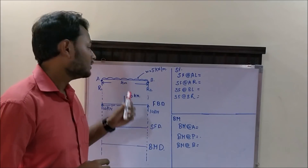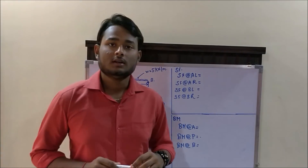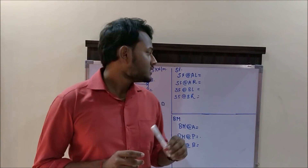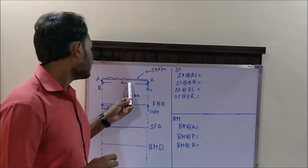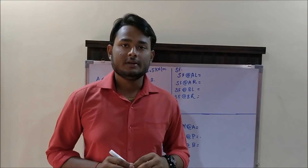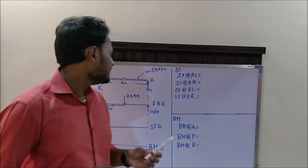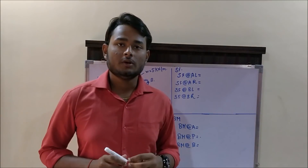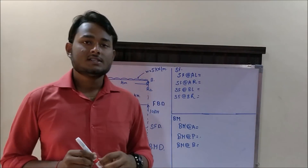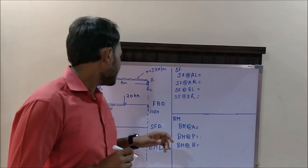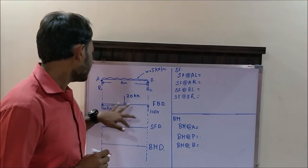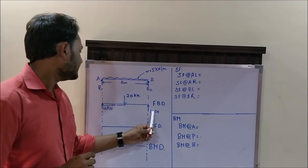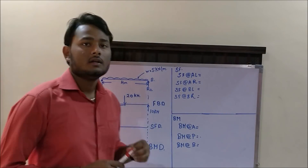Let us consider an example. In this example, a UDL of load intensity 5 kN per meter is running over a span of 4 meters. The support reactions can be calculated by constructing an FBD and using the two basic equations of equilibrium: summation Fy = 0 and moment at any one of these points = 0. The support reactions turn out to be 10 kN and 10 kN both.